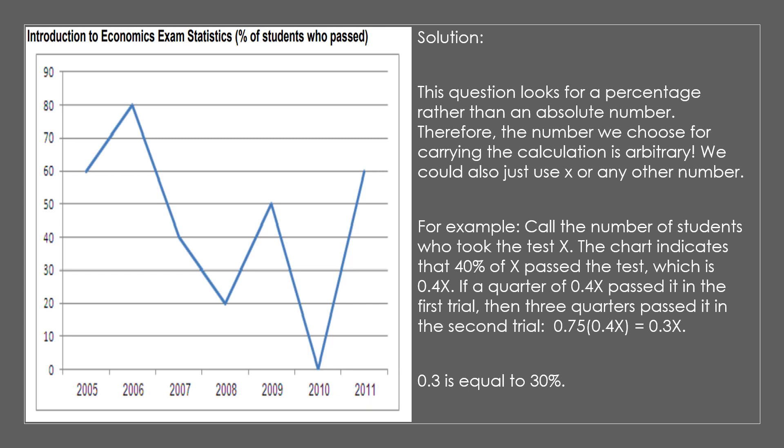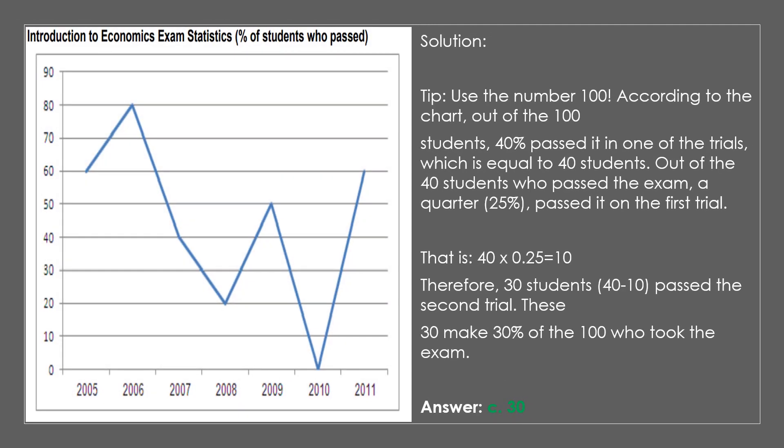If a quarter of 0.4X passed it in the first trial, then three-quarters passed it in the second trial. 0.75 multiplied by 0.4X equals 0.3X, which is equal to 30%. Tip: use the number 100. Out of 100 students, 40 passed. A quarter of 40 is 10, so 30 students passed the second trial — these 30 make 30% of the 100 who took the exam.